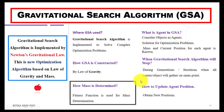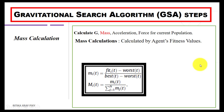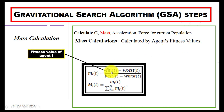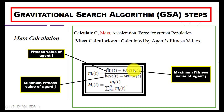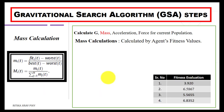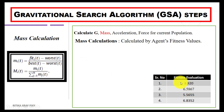How do we calculate mass? Using the fitness function we can compute mass. Mass is calculated by the agent's fitness value — this is the fitness value for the agent, this is the best (maximum fitness value), and this is the worst (minimum fitness value). Putting the values into the equation — for the first search agent, the fitness value is 3.920, the best fitness value, and the worst fitness value — we obtain the mass for the first, second, third, and fourth agents.